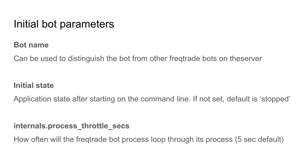The initial state option determines if the bot's application state is stopped or running after you turn it on. When you start the bot on the command line, this configuration determines if the bot is actually doing something or not. You can start the bot but tell it to wait until you give it a real starting signal to trade. These signals can be given by API or Telegram. I always leave the default state at running, so I know that when I start the bot, it's actually trading and not left in a stopped state.